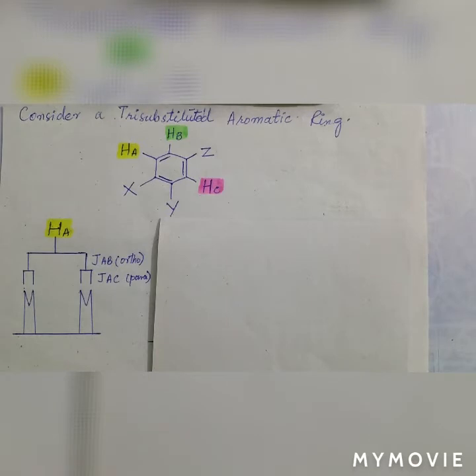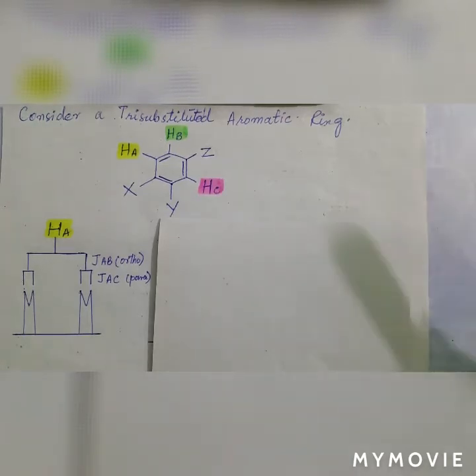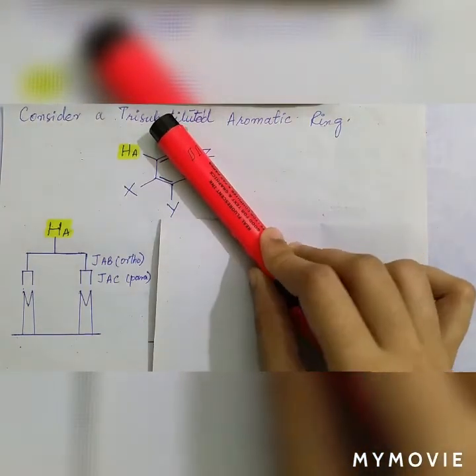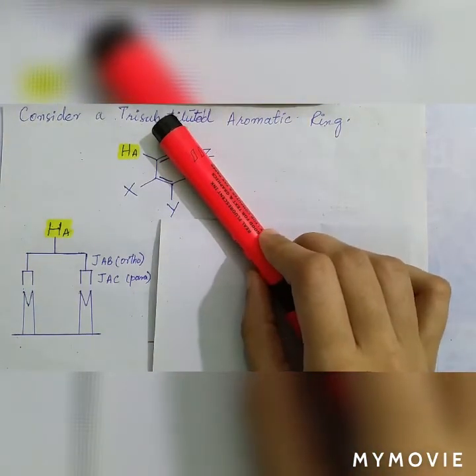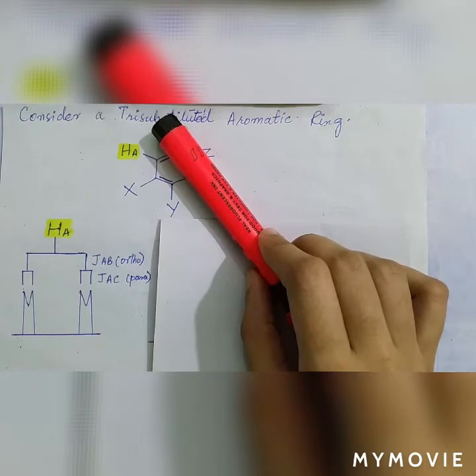Consider our tri-substituted aromatic ring system, in which three substituents X, Y and Z are there, and the remaining hydrogens will be three in number: A, B and C. Now, forget about HB and HC for a while, and consider only HA.